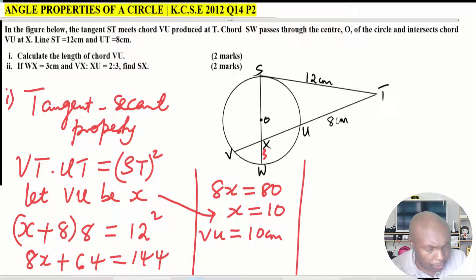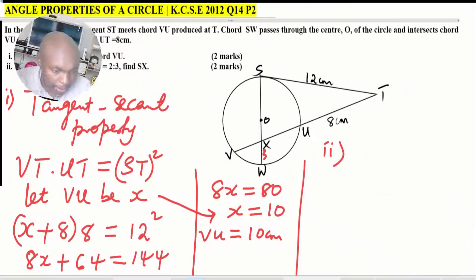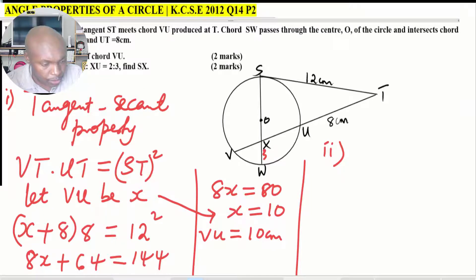Remember what is x? X was VU, so VU therefore equals 10 centimeters. Now let's go to the second part of the question. You're given this ratio VX to XU is 2 is to 3, find SX. You need to think what property is going to assist you. The property you're going to use is the property of intersecting chords.